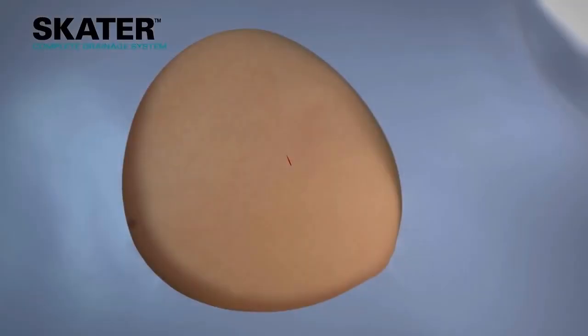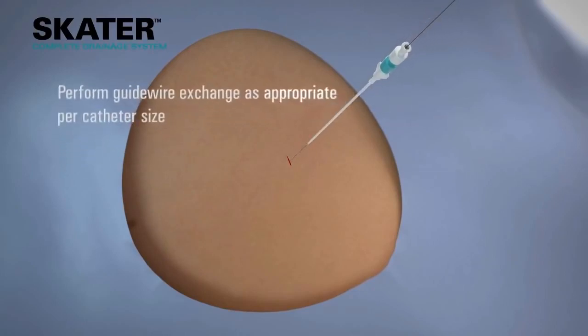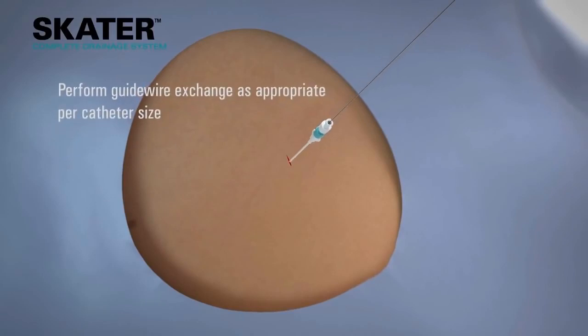After making the skin nick, an introducer set is used to place a guide wire. The guide wire is placed through the access needle into the cavity and the access needle is removed. The tract is progressively dilated to one French size greater than the size of the catheter to ease introduction.